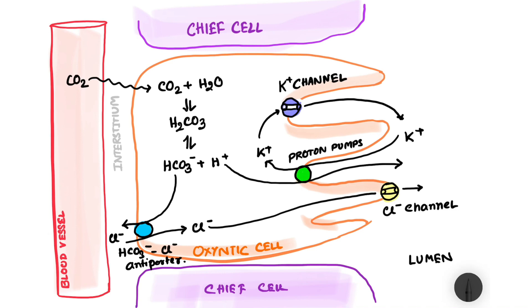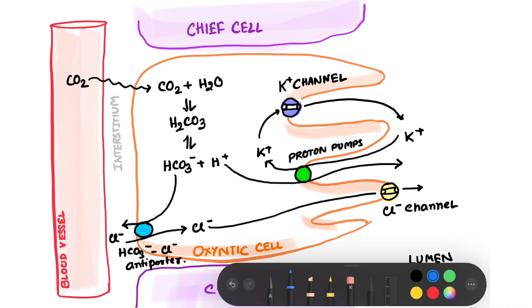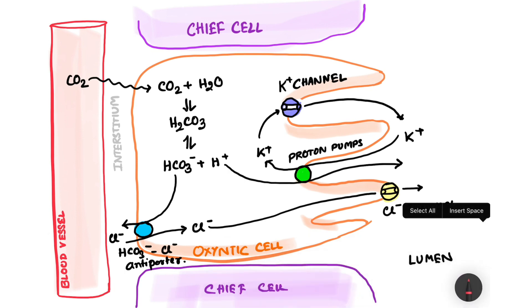So if we see in the lumen finally what we get, we get H plus ion which was thrown out of the cell by the proton pump that is H plus K plus ATPase.